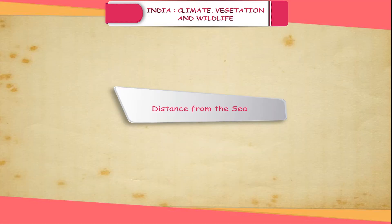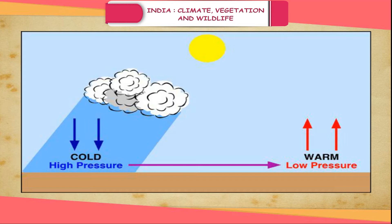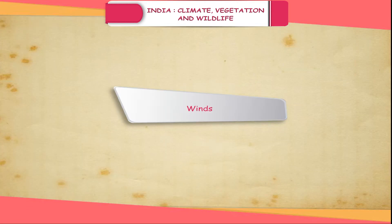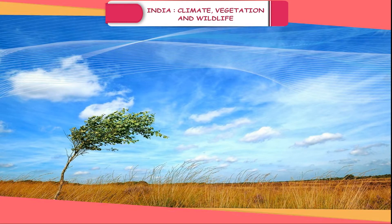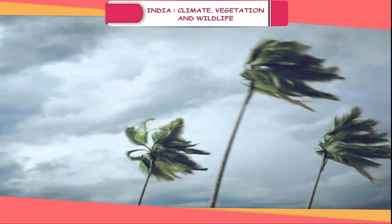Distance from the Sea: The sea has a cooling effect over coastal areas. They have a moderating effect, which means that areas close to the sea do not experience a large variation in temperature. This explains why Kerala experiences less variation in temperature than that of Delhi. Winds: If there is a difference in atmospheric pressure between two regions, air moves from a region of higher pressure to the region of lower pressure. This movement of air is called wind. A constant cool wind makes the climate cooler and a hot wind makes it warmer.